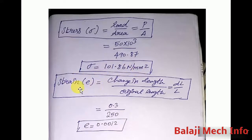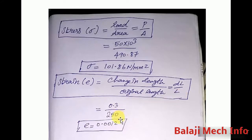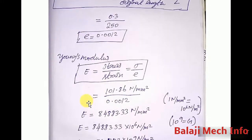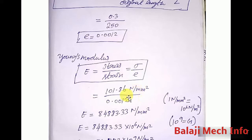Now we calculate strain. Strain equals change in length divided by original length. Change in length DL is 0.3 mm, original length L is 250 mm. So strain equals 0.3 divided by 250, which equals 0.0012. Strain has no unit. Now we substitute into E equals stress divided by strain: E = 101.86 divided by 0.0012.